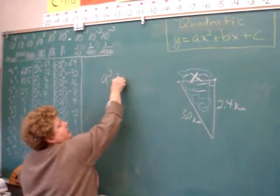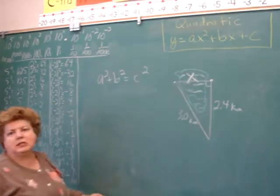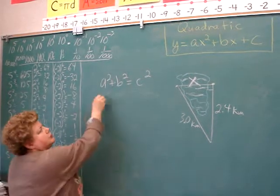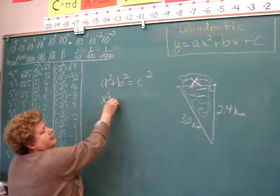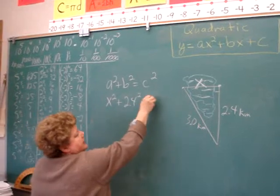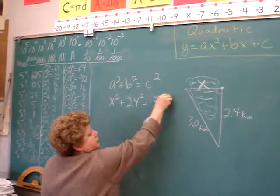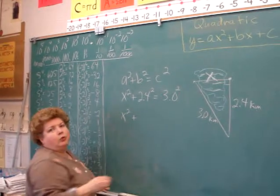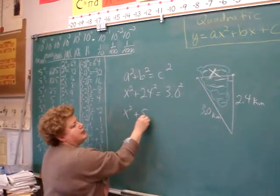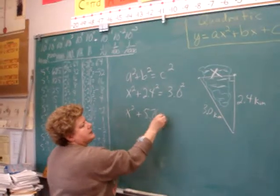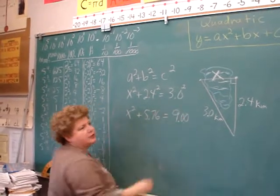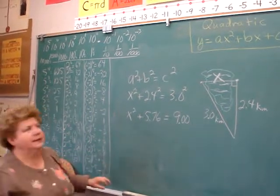And remember, Pythagorean relation is a squared plus b squared equals c squared. And in this one, our a is x. I'll let that be x. So we have x squared plus 2.4 squared equals 3.0 squared. And 2.4 squared is 2.4 times 2.4, which is 5.76. And 3 squared is 9.